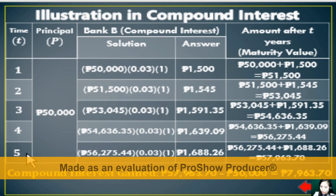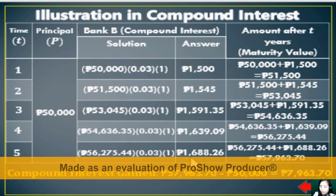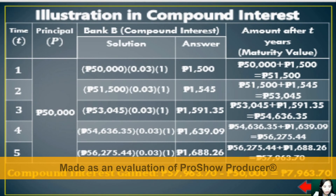In Year 5, using 56,275 pesos and 44 centavos from the previous maturity value times 0.03 times 1, the compound interest is 1,688 pesos and 26 centavos. Therefore, the total compound interest gained from Bank B over five years is 7,963 pesos and 70 centavos.